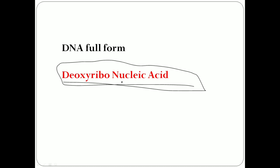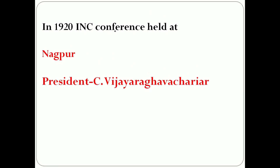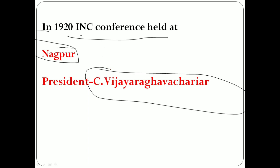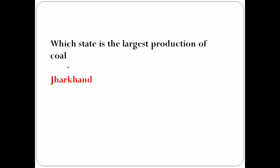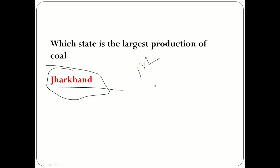The chemical name of table salt is sodium chloride. We are going to wrap up. We have to make a difference in the country — if we have to make a difference in the country, then we can.